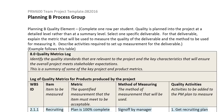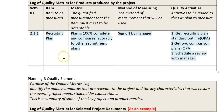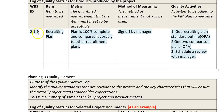Let's start working on Planning B Process Group. The first template we run into is 8.0 Quality Metrics Log, and it's important that we find the quality standards that are relevant to this project. Quality is really planned at a very detailed level. Let's go down and look at our WBS item about this recruiting plan.